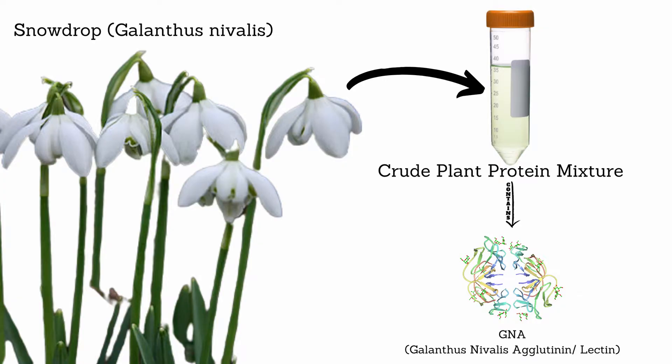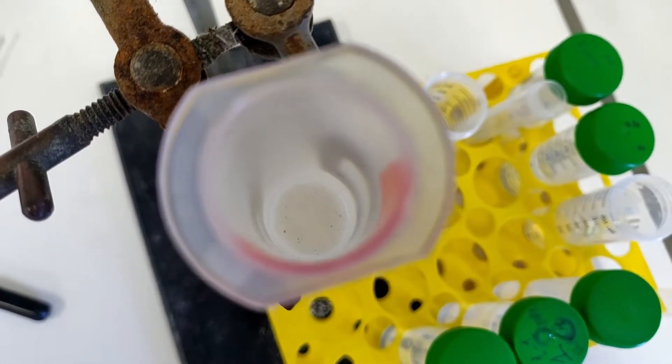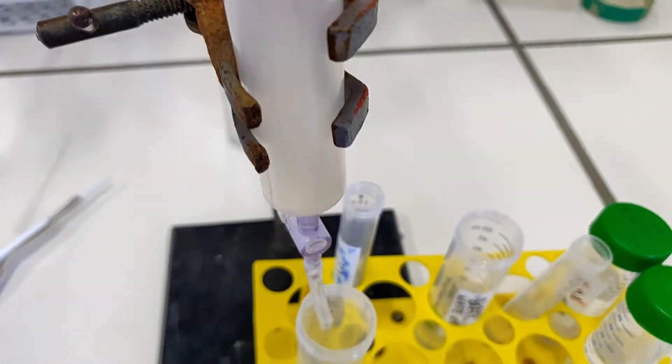The protein mixture containing our lectin, called GNA, was obtained from snowdrop bulbs, which are flowers. This is a Manose Sepharose 4B affinity column I'm going to use, because it specifically binds with our GNA lectin.